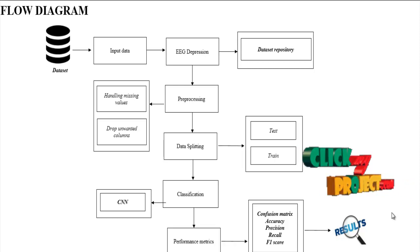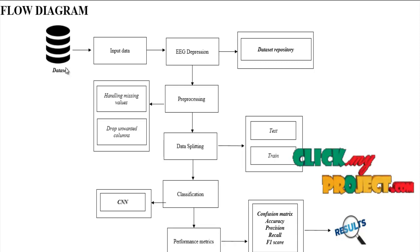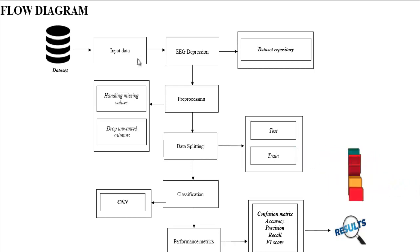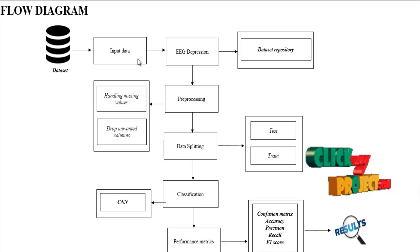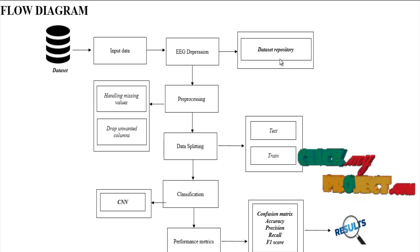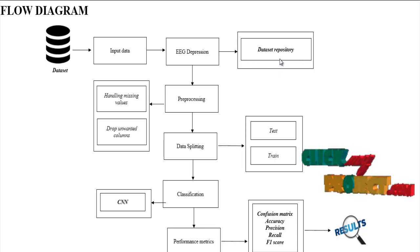Now we are going to see about the flow of our process. First, we take the dataset as input. The dataset name is the EEG depression dataset, which was taken from sources such as UCI, GitHub, Kaggle, and so on.